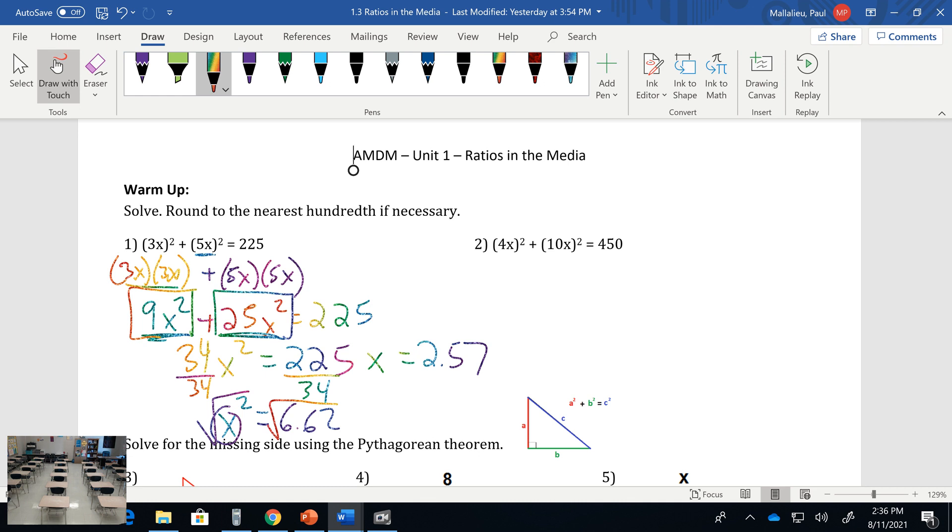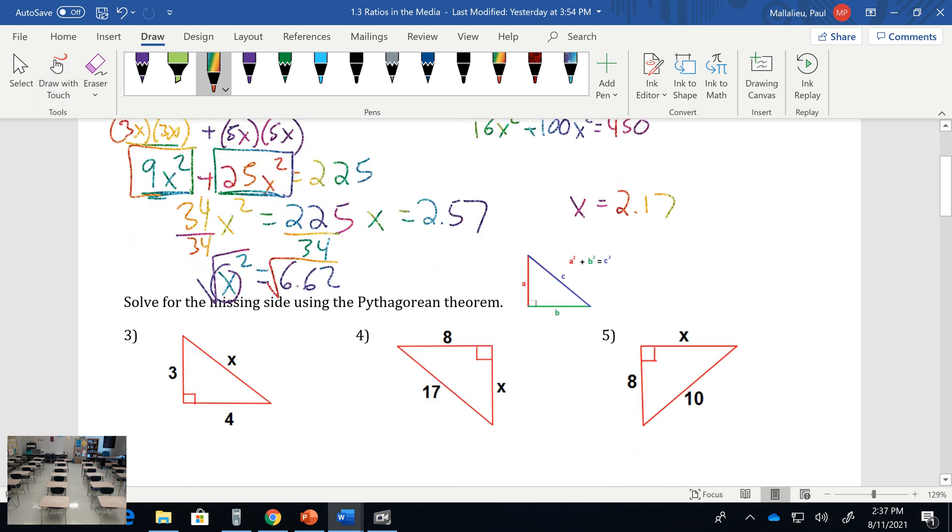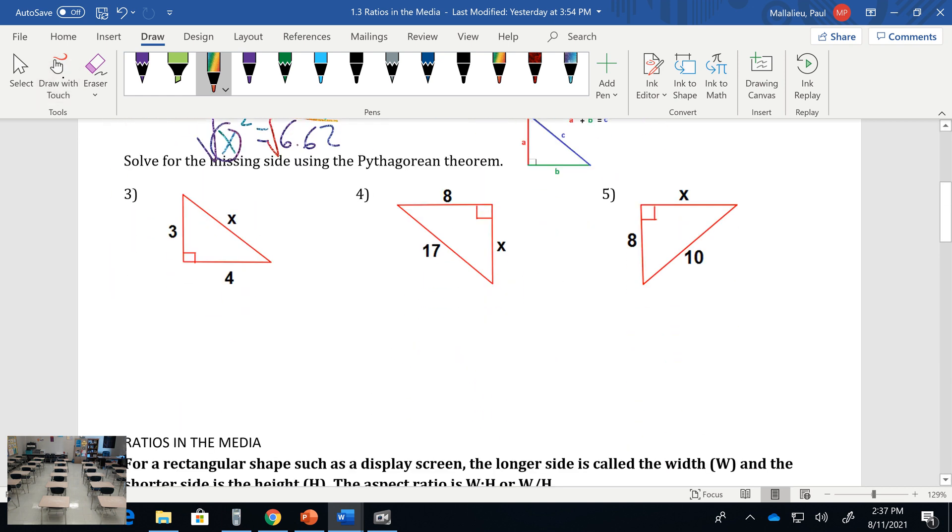I'll let you guys try the second one, but it's going to be very similar in the process. You're going to end up with 2.16. Just remember you're going to have 16x² plus 100x² equals 450. Combine like terms and divide.